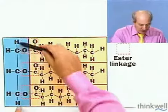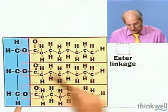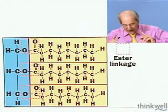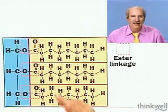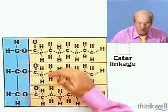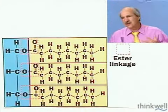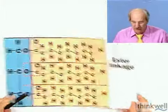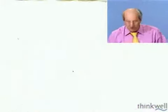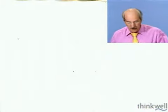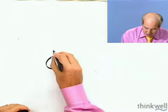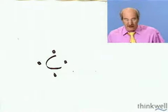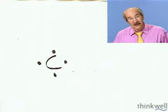Fats are triglycerides — a glycerol backbone hooked generally to three fatty acids. The fatty acids can be any length. I want to talk about what a fatty acid is and what the term saturated means versus unsaturated. Quick review of carbon chemistry: carbon has four bonding sites. Using Lewis dot notation, we have our four valence electrons. Remember that carbon tends to form chains.